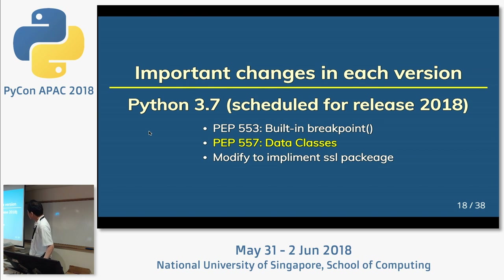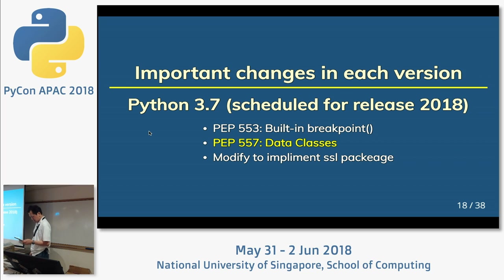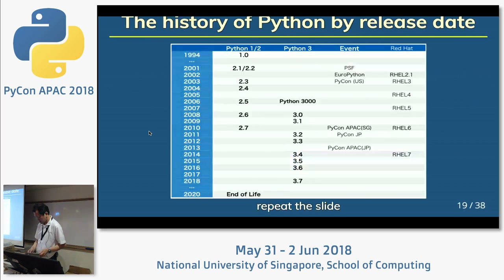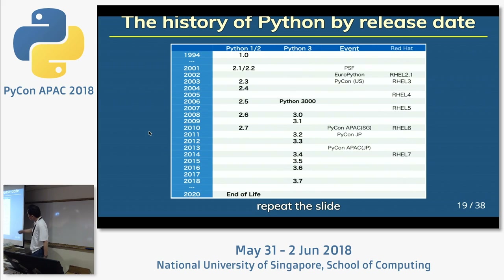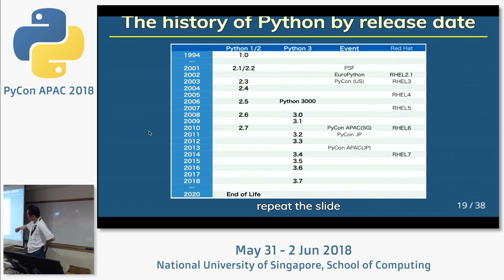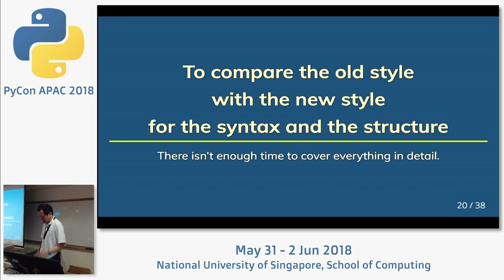Python 3.7 is scheduled for release this month. The important feature is data classes. To repeat the history: Python 2 end of life is 2020, and Python 3.7 is released this month. The main topic is to compare old style with new style for syntax and structure.